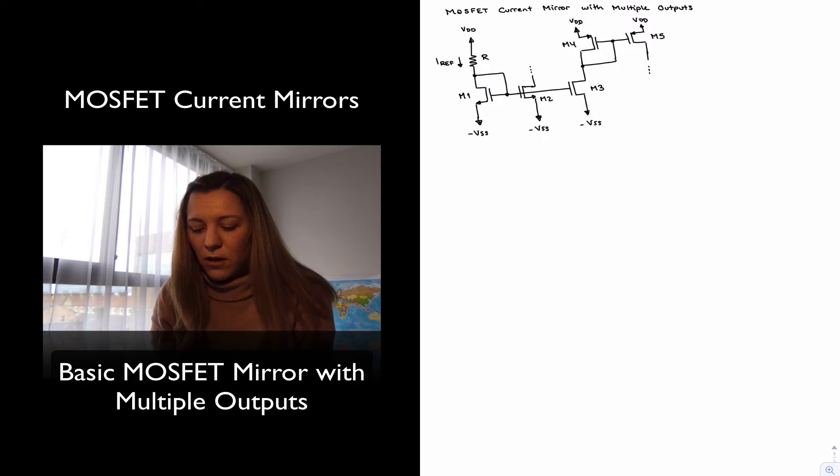Very simply I have put my reference current generated by resistor R, it flows through transistor M1, or it goes through the drain of transistor M1, gets mirrored into M2.